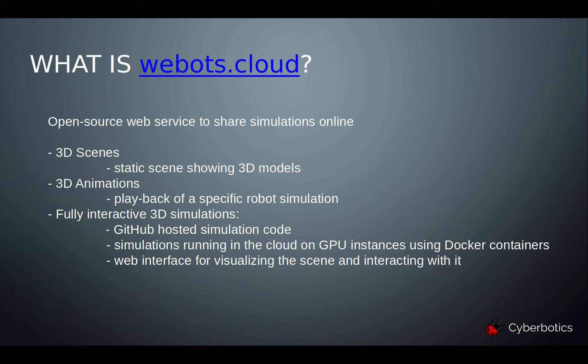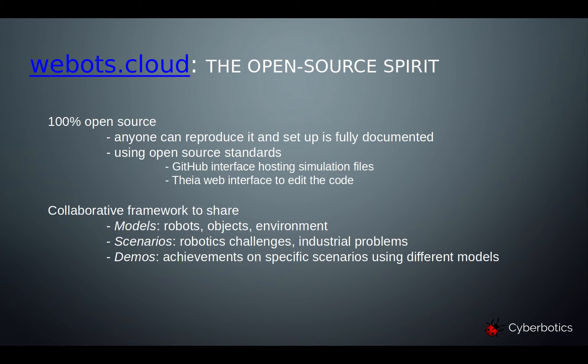You can share 3D scenes that are static scenes showing 3D models, or 3D animations — a playback of a specific robot simulation where you can navigate in the scene using the mouse and move back and forth in the simulation recording. And then fully interactive 3D simulations, where the simulation code is hosted on a GitHub repository and the simulation runs on the cloud on GPU instances using Docker. The scene is visualized in the browser using a web interface that also allows interaction.